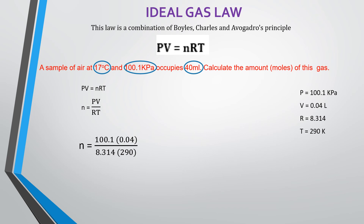Substituting into n = PV/RT: pressure 100.1 multiplied by volume 0.04, divided by R (8.314) times temperature 290 K. The moles we get is 1.66 × 10⁻³ moles. Remember the four things: formula, working, answer, and unit. All four must be in your calculation, and your final answer must be to two decimal places.